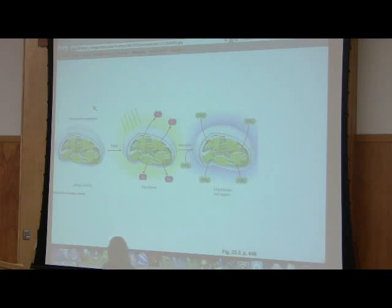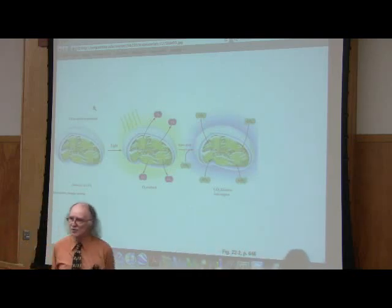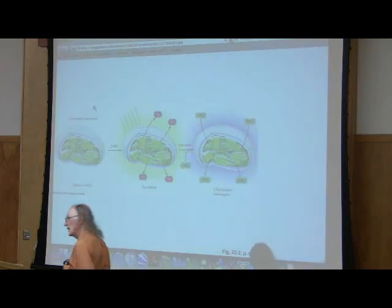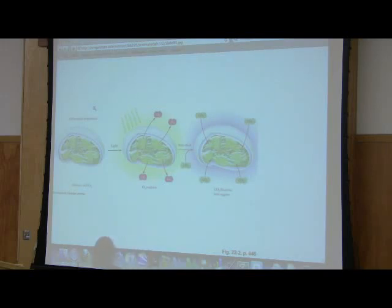Protons staying in the solution there. Electrons move through the complexes of the thylakoid membrane. Generating a proton gradient. Protons are pumped into that thylakoid space. So when they come out, they make ATP. The electrons are ultimately donated to NADP to make NADPH.